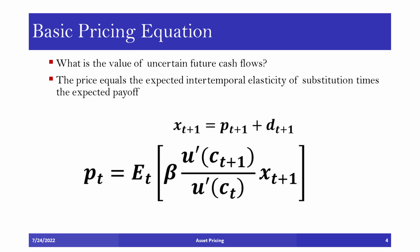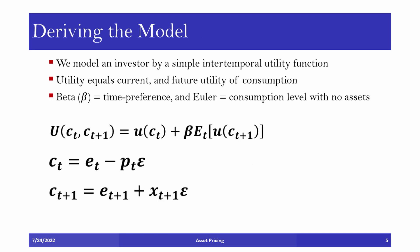Now let's take a step back and look at how we can derive the model. To begin with, we simply model an investor by a utility function with current and future values of consumption. As seen here by the equation, the utility equals current utility of consumption plus future utility from consumption discounted for the investor's impatience. This begs the question: how much should the investor buy or sell? We can define this problem as a maximization problem as shown by the second equation, where Euler denotes the consumption level when the investor has bought none of the asset, and epsilon as the amount of the asset he or she chooses to buy. That is, consumption today equals current consumption minus price times the quantity of the asset.